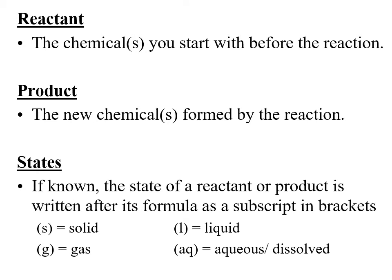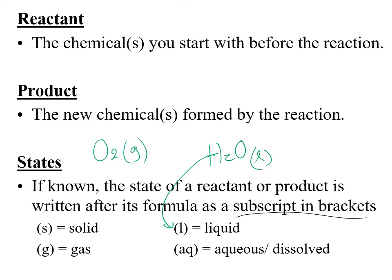We're also able to include the states of the species. If we know them, you should include them — sometimes it is really important. We write them as a subscript in brackets after the chemical formula. So if we have H2O, we could say it's a liquid and write that as a subscript. If we had oxygen as a gas, we'd write O2 and then indicate its state in this particular reaction is a gas.